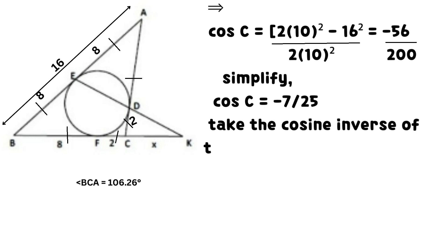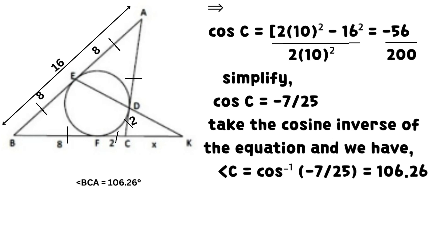Simplify further to obtain that cosine C equals negative 7 divided by 25. Take the cosine inverse of the equation and we have that angle C equals the cosine inverse of negative 7 divided by 25 which equals 106.26 degrees to two decimal places.